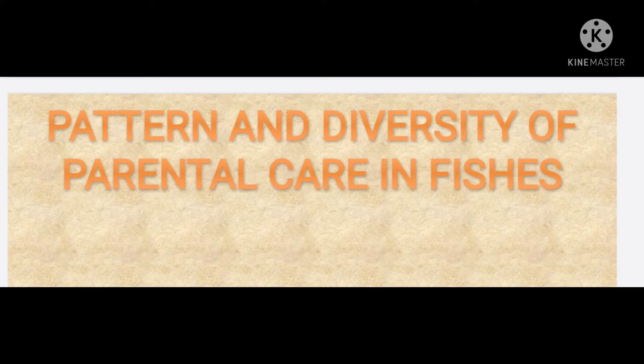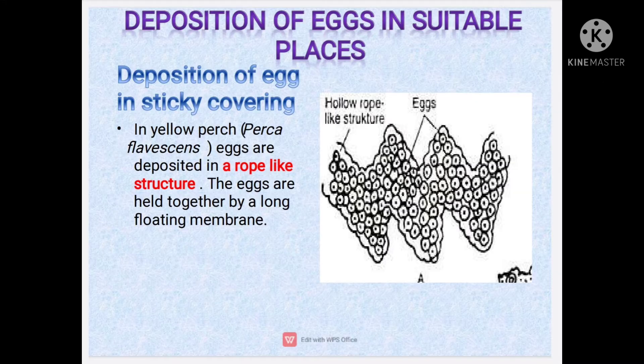Now, what are the patterns or ways in which fishes show parental care toward their young ones? There are basically four ways in which fishes show parental care. We are going to discuss them one by one in detail. The first one is deposition of eggs in suitable places — in this method the fishes choose suitable places and deposit their eggs in them.